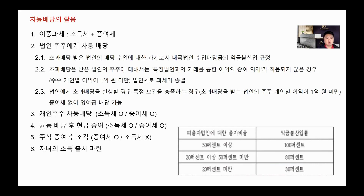아까 처음에 말씀드린 첫 번째로는 원천징수하는 부분, 두 번째로는 초과배당의 세법적인 부분, 즉 두 번 신고를 해야 된다고 했잖아요. 그런 것들에 대한 컨설팅이 필요할 것 같고요. 세 번째는 신설법인을 설립해서 그쪽으로 초과배당을 해보는 것은 어떤지, 그랬을 때 봐야 되는 규정들은 2-1, 2-2, 2-3, 이 세 가지입니다. 이 세법상 규정을 살펴보시고, 신설법인을 설립해서 초과배당을 하고, 그 초과배당을 한 법인이 부동산을 산다든가 자녀의 소득출처를 마련해 준다든가, 이런 방식을 통해서 초과배당을 활용하면 어떨까 생각해봤습니다.